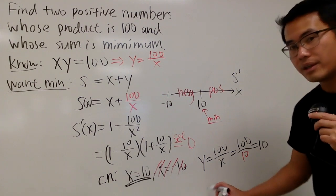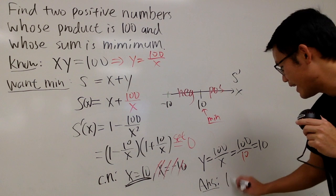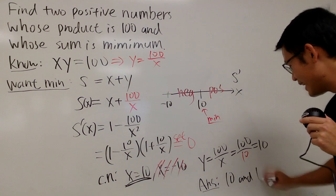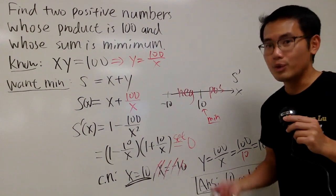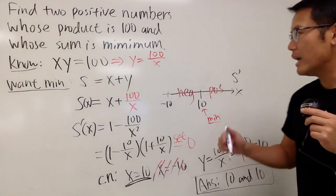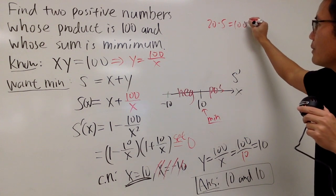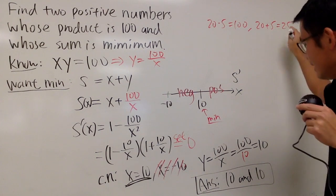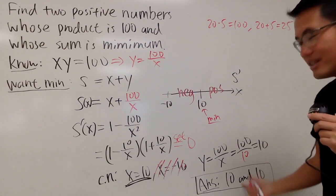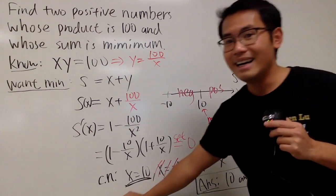So I will just tell you guys right here. So the answer is just going to be 10 and 10. And of course, when you multiply 10 and 10, you get 100. When you add them up, you get 20. And if you look at, let's say, 20 times 5, this is going to be 100 as well. But if you do 20 plus 5, this is 25, which is not smaller than the sum of this. But anyway, this right here is it.